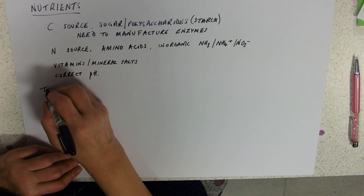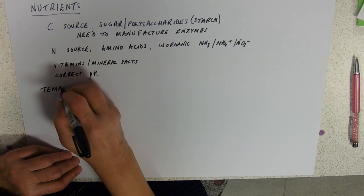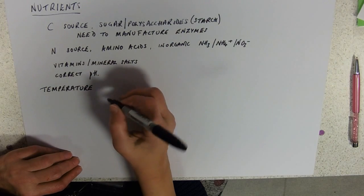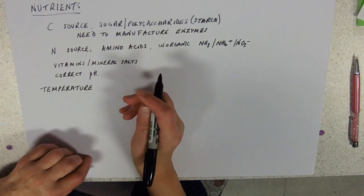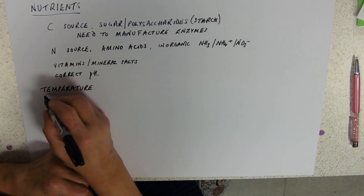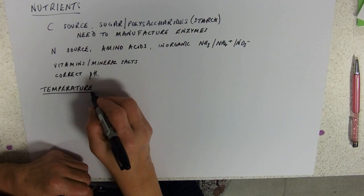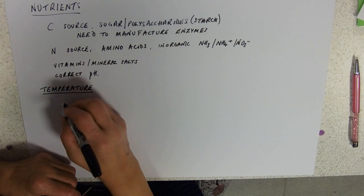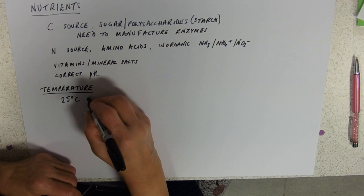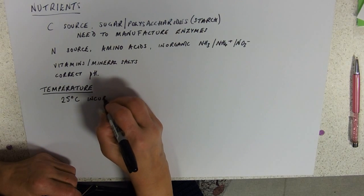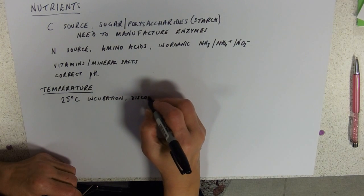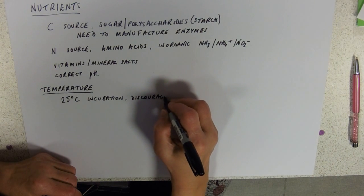To go to the more esoteric bits, the thing that affects growth rate I suppose would be temperature. And there was a super little question about cold microbes, hot microbes, medium microbes. As far as growing in a laboratory is concerned, we usually incubate at 25 degrees centigrade to discourage pathogen growth.